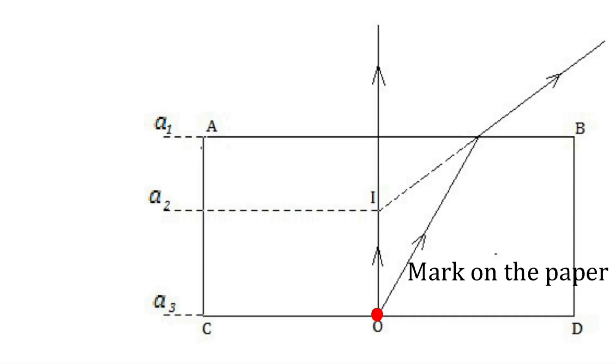We are going to mark on the paper to avoid search and time waste, that is why the graph sheet is used. For different views, because of refraction, light will be used. For normal incidence, due to the light and refraction phenomena, there will be an apparent shift in the position of the mark on the paper.